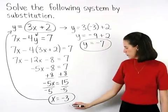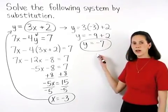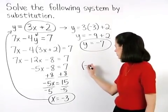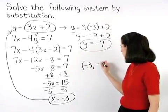Since x equals negative 3 and y equals negative 7, our solution is the ordered pair negative 3, negative 7.